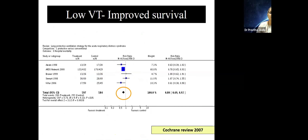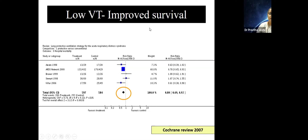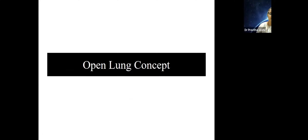A major study in the early 2000s and late 1990s found that low volume surely improved survival. We are now also moving in neonatal ventilation toward volume guarantee and volume-controlled ventilation. The concept covered in previous lectures — which I'll go over quickly — is what we want to focus on: the open lung concept.